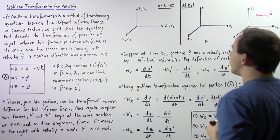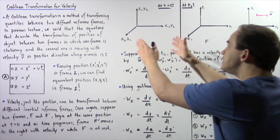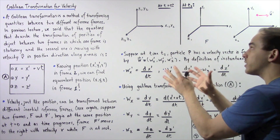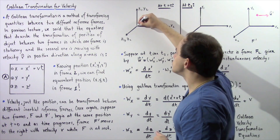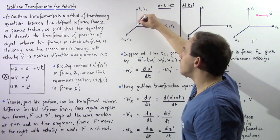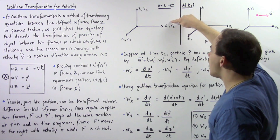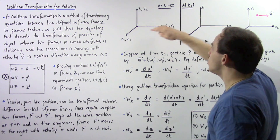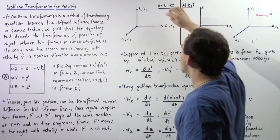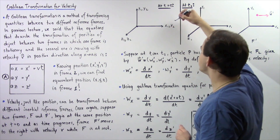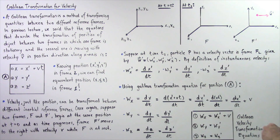In this diagram, at time equal to 0 seconds, the two frames — these two coordinate planes — exactly coincide. The origin of frame 1 lies on the origin of frame 2, so x1 and x2 lie on top of one another, y1 and y2 lie on top of one another, and z1 and z2 also lie on top of one another.